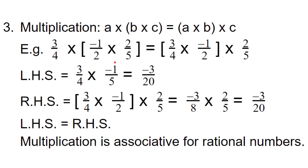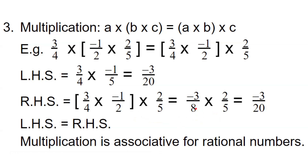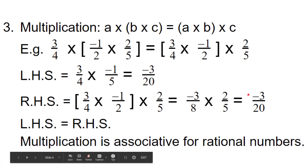3/4 multiplied by (minus 1/2 multiplied by 2/5) is equal to (3/4 multiplied by minus 1/2) multiplied by 2/5. LHS: 3/4 multiplied by the bracket — simplifying, 2 and 2 can be cancelled, leaving minus 1/5. So 3/4 multiplied by minus 1/5, the product is minus 3/20. For RHS: we have two fractions in the bracket to multiply. 3/4 multiplied by minus 1/2 gives minus 3/8, then multiplied by the third rational number 2/5. Multiplying, 2 can be cancelled with 8 to give 4. The product becomes minus 3/20.